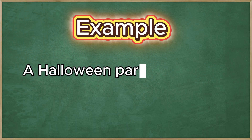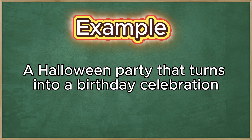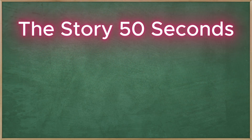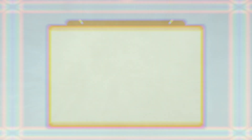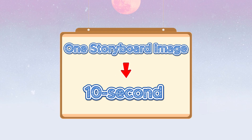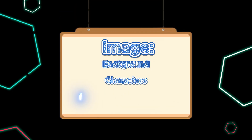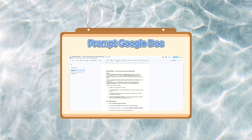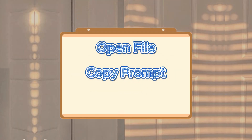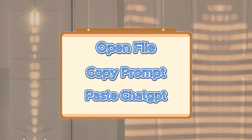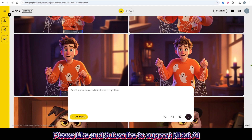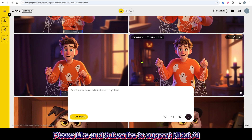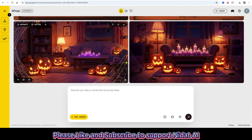After pasting it into ChatGPT, it'll generate 10 small ideas using the same structure. In this example, I chose the theme: A Halloween Party that turns into a birthday celebration. The story lasts about 50 seconds, so I divided it into 10 parts, roughly 5 seconds each. For each part, we'll need one storyboard image. Each image includes the background, characters, and other details like cake, cars, or props. All the sample prompts are available in my free community Google Doc. Just open the file, copy the prompt, and paste it into ChatGPT. ChatGPT will create two types of prompts — one for characters and one for backgrounds. Do this for each part of the story. To generate the images, I use Google Whisk. It's free and delivers great quality.